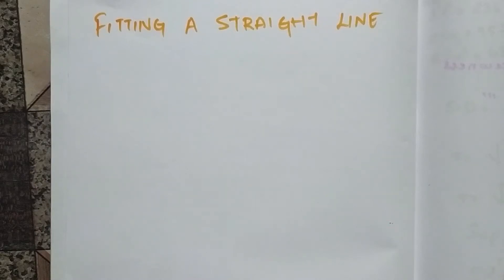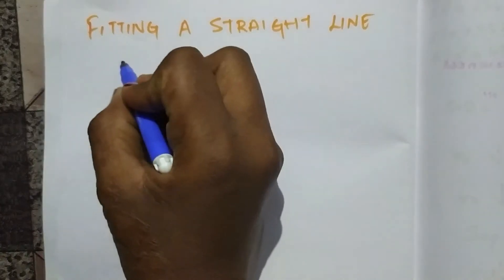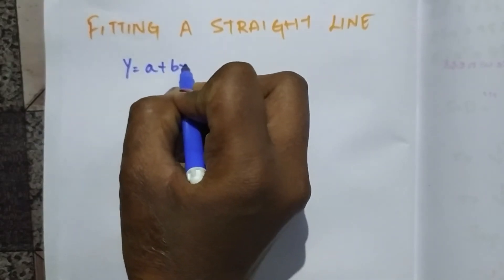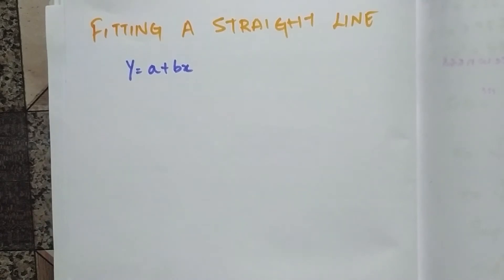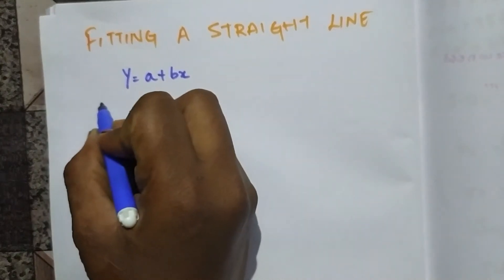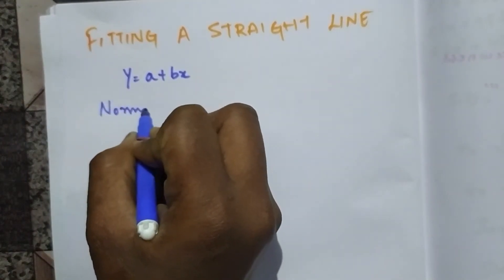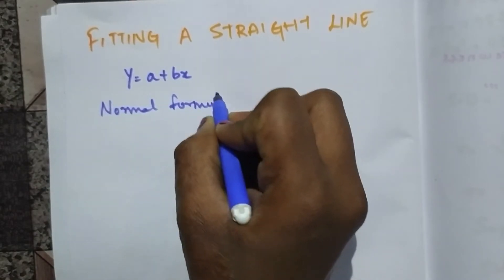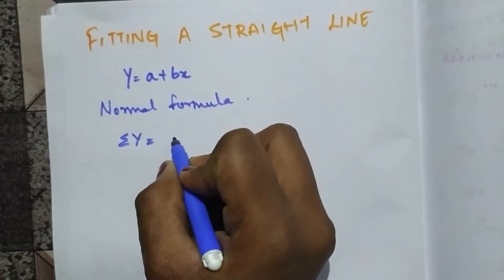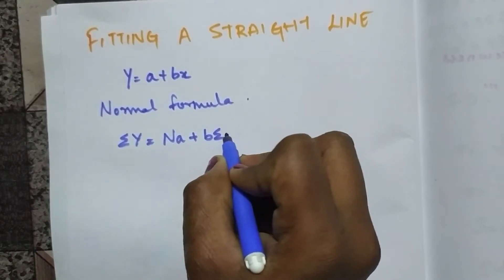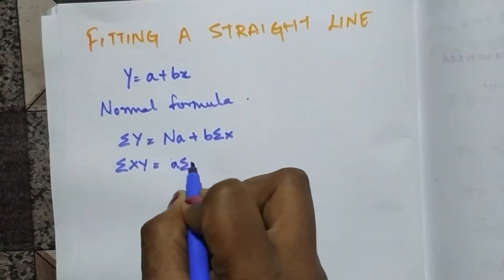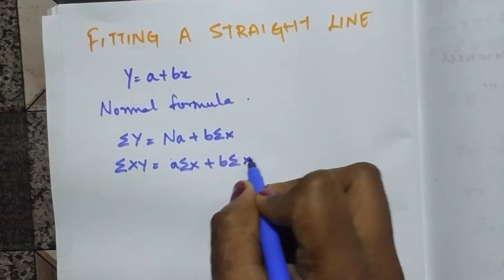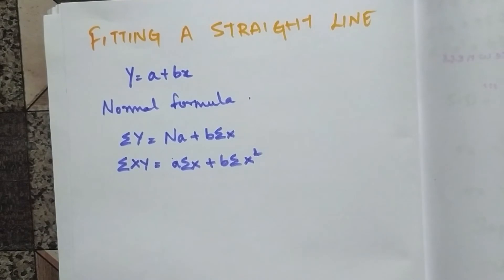Hello guys, in this video we'll be learning about fitting of a straight line. The normal equation for this is y = a + bx. We have to find 'a' and 'b'. The normal equations to find a straight line are: summation y = na + b·summation x, and summation xy = a·summation x + b·summation x².